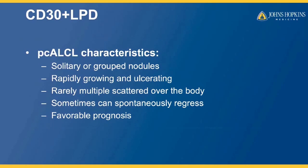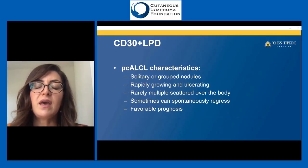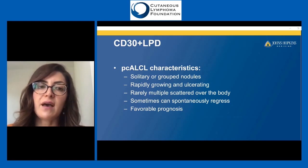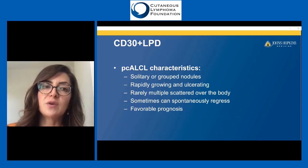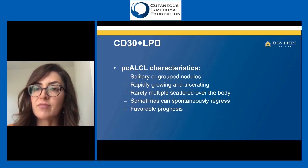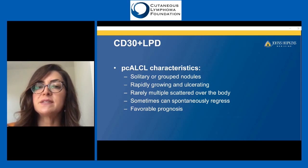Primary cutaneous anaplastic large cell lymphoma (ALCL) presents as either a solitary growth or grouped nodules — usually rapid-growing and ulcerating, sometimes in multiple areas of the body. Occasionally they regress, but usually they stay until treatment is given. Despite the scary appearance and the 'anaplastic' name, ALCL has a very favorable prognosis and is usually responsive to treatment.